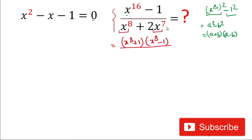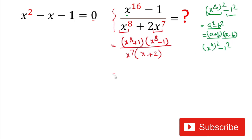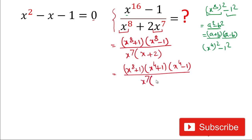In the denominator, we have x to the power 8 and x to the power 7, so we'll take x to the power 7 common, leaving x plus 2. Now x⁸ minus 1 is in the form of (x⁴)² minus 1², which we expand as (x⁴ + 1) times (x⁴ - 1). So the numerator becomes (x⁸ + 1)(x⁴ + 1)(x⁴ - 1), divided by x⁷ times (x + 2).